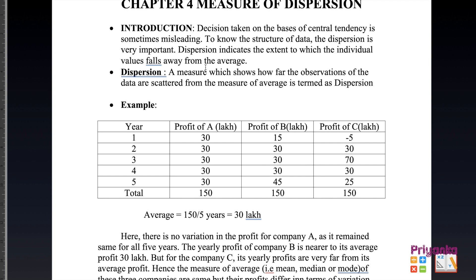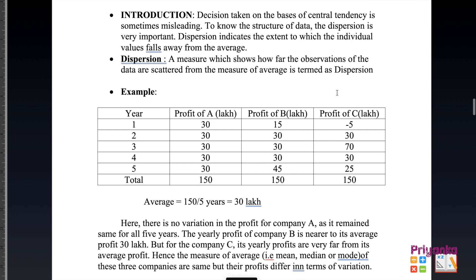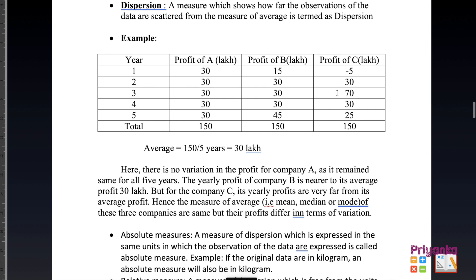Dispersion is very important, and that will be more clear with this example. The definition has been given by Carl Pearson: the measure which shows how far the observations of the data are scattered — how much it has been spread from the measure of average — is termed dispersion.